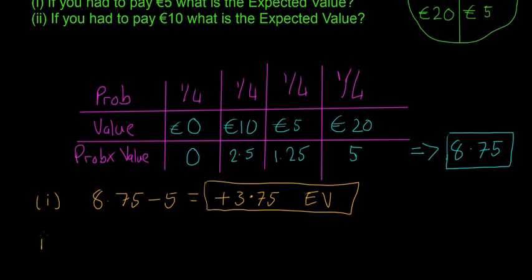If, for example, we have to pay 10 euro, then we're going to have 8.75, which is what we get back every time, minus 10 euro, which is what we have to pay every time, and that'll leave us with minus 1.25, and that's our expected value.